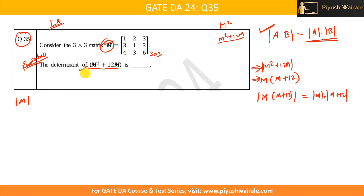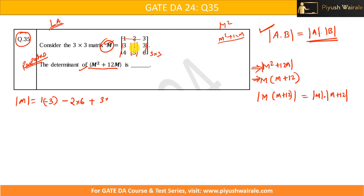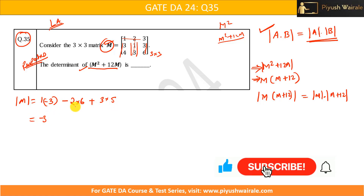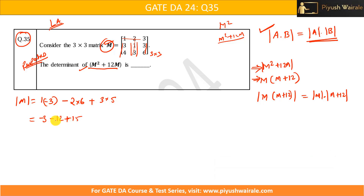Calculating the determinant of M by cofactor expansion: 1 times (6 minus 9) gives minus 3; minus 2 times (18 minus 12) gives minus 2 times 6, which is minus 12; and 3 times (3 minus 4... wait, 9 minus 4) gives 5, so plus 15. Adding up: minus 3 minus 12 plus 15 equals zero. So the determinant of matrix M is zero.